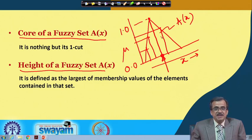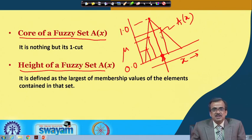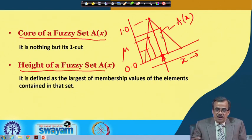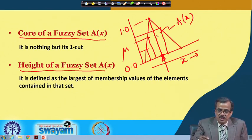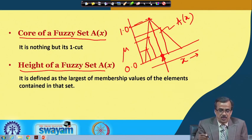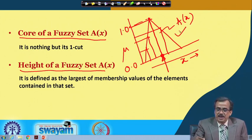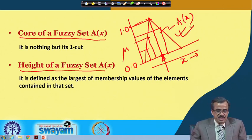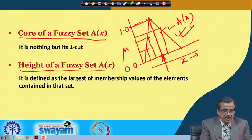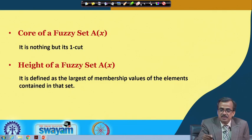The height of a fuzzy set is defined as the largest of all the membership function values corresponding to the different values of the element. Here, the maximum value for the membership is nothing but 1.0. So the height of this particular fuzzy set is 1.0. This is the way we define the height of a fuzzy set.